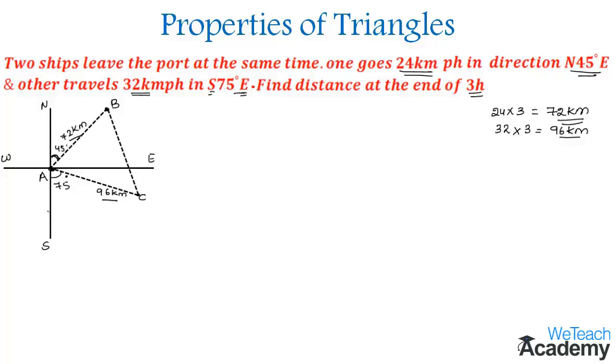So using that concept we can find angle A. So angle A would be 180 degrees minus these both angles which in turn become 60 degrees. So 60 degrees is the value of angle A.